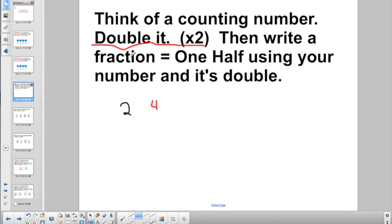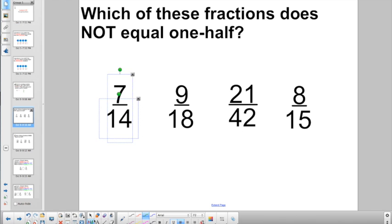Then, write a fraction equal to one half using your number. I picked two. And its double. That was four. So they want you to write a fraction equal to half using a two and a four. So two would be my numerator and four would be my denominator. Not too tough so far.